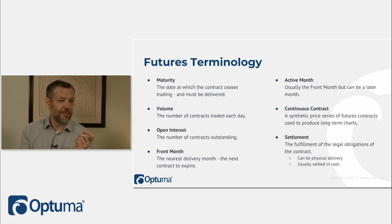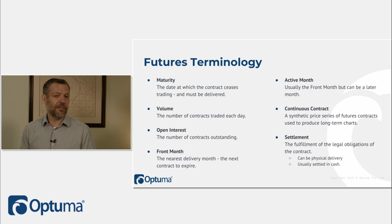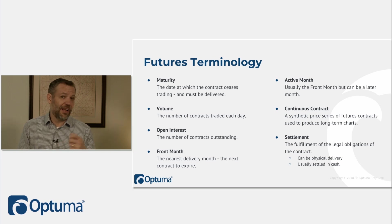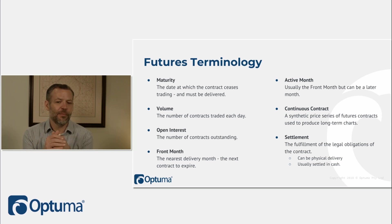Front month is the nearest delivery month — the next expiry that's going to happen. Active month is usually the front month, but sometimes the most active month is one month back. As we get close to expiry, many traders say there's no point buying a contract that closes in four days, so they buy the next contract. The active month is whichever contract has the most volume being traded.